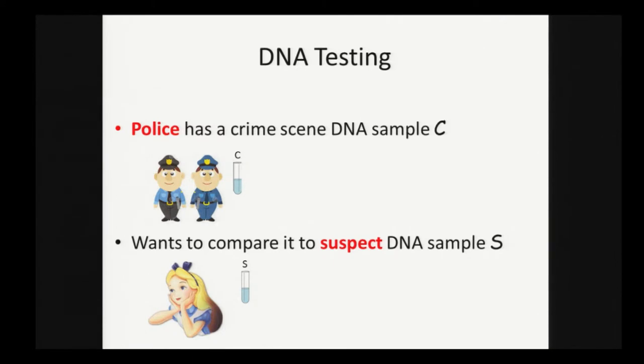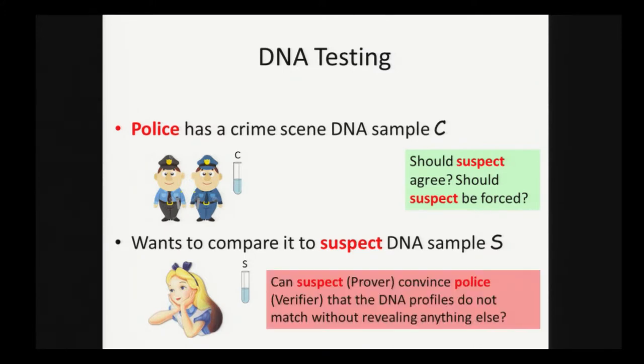Suppose the police has a crime scene DNA sample we call C, and they want to compare it to a suspect's DNA sample we call S. Should they be able to do it? It's a debatable question. There was actually a Supreme Court case on this a couple years ago. Our question is: can the suspect convince the police that the DNA profiles don't match without revealing anything else about the profiles?